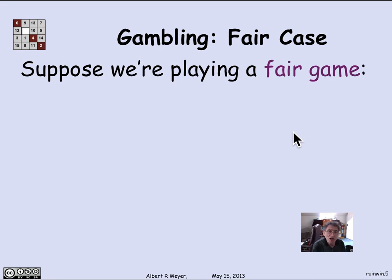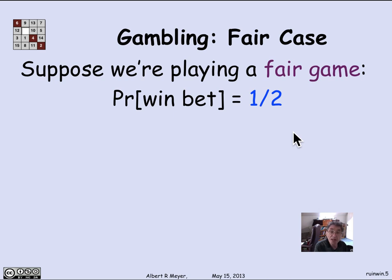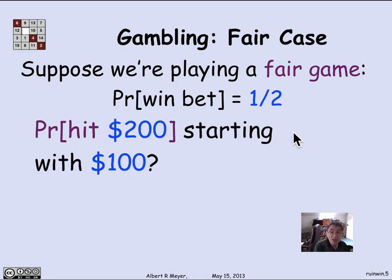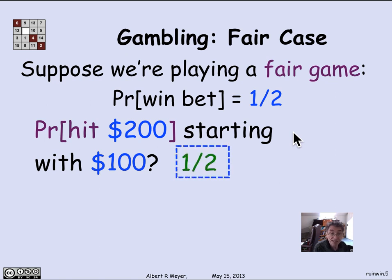In a fair game, the probability of winning a bet is 50-50 — no bias either way. Suppose I ask: what's the probability of hitting $200 as my target, if I start with $100? Well, $100 is midway between 0 and $200. So by symmetry, the probability of hitting the upper boundary is the same as hitting the lower boundary — it's going to be 50-50. The probability of doubling your stake before going bankrupt is 50-50.